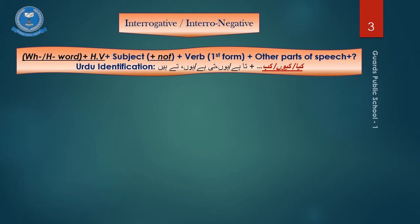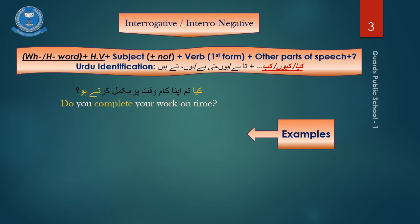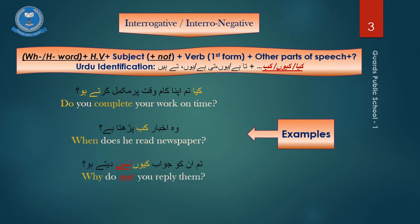For the Urdu identifications, we have kya, kyun, or kab in it apart from the identifiers that we learnt just now. For example, kya tum apna kaam vaqt par mukamil karte hoon? Do you complete your work on time? Example number two, wo akhbar kab padhta hai? When does he read newspaper? Last one, tum unko jawaab kiyo nahi dete hoon? Why do you not reply them?